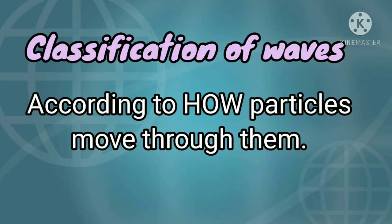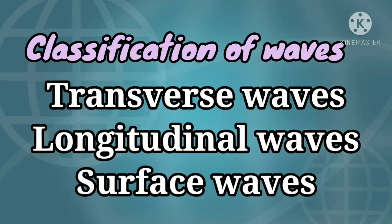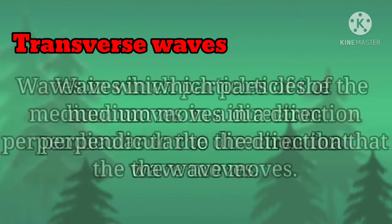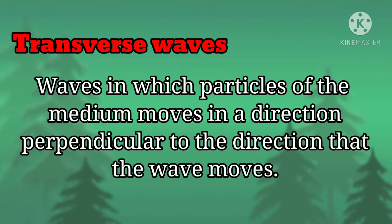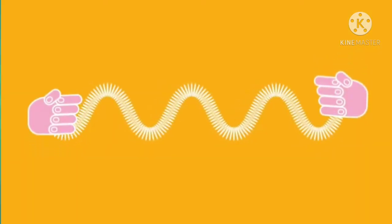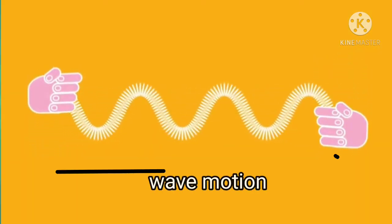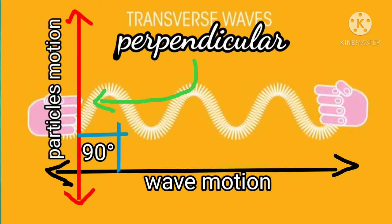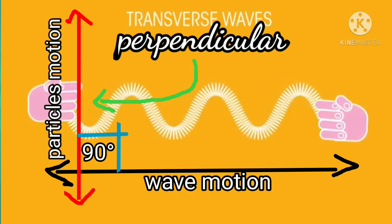Classification of waves according to how particles move through them: We have transverse waves, longitudinal waves, and surface waves. Transverse waves are waves in which particles of the medium move in a direction perpendicular to the direction that the wave moves. As you can see in this illustration, the wave moves horizontally, while the particles move up and down or side by side perpendicular to the direction of the wave motion.